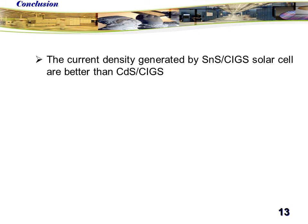As conclusion, this study enabled us to find that the current density generated by structure with tin sulfide solar cells are better than structure with cadmium sulfide buffer layer.